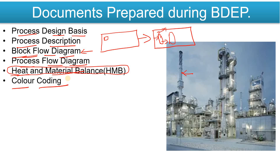The Color Coding document gives information about which color to apply on each equipment, what is the RAL code of that color, which color to use on the structure, supports, and piping — all that information you get from the Color Coding document.